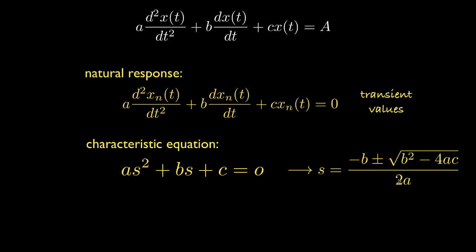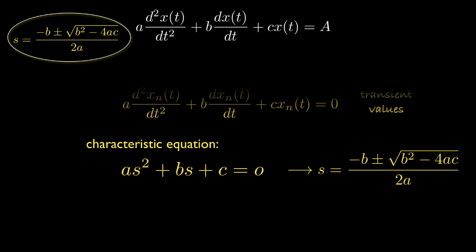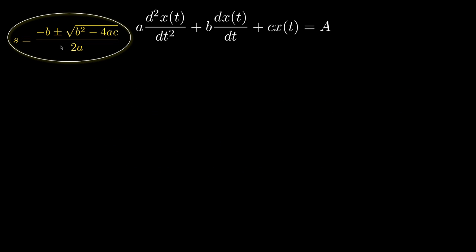The characteristic equation will, in general, have two roots, and those roots can be obtained through the quadratic equation. There are three possible situations that can occur for these roots, determined by the relationship between b squared and 4ac, which make up the terms inside the square root. Those three situations occur when b squared is greater than 4ac, when b squared is equal to 4ac, and when b squared is less than 4ac.